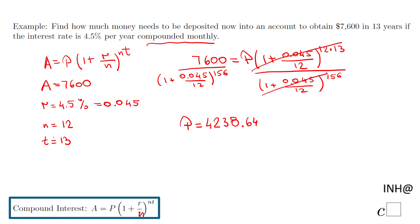So that means in order to have $7,600 in 13 years, compounded monthly at this rate, I need to deposit this amount of money at the beginning of that period of time. This is what is called also future value.